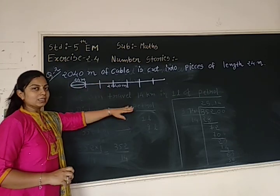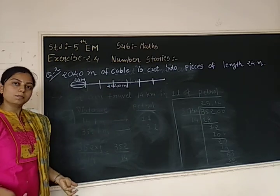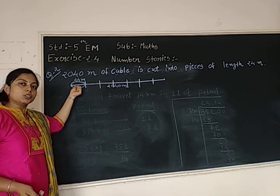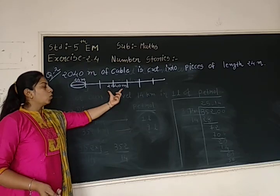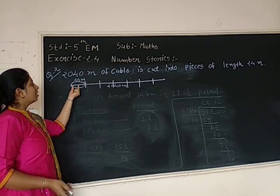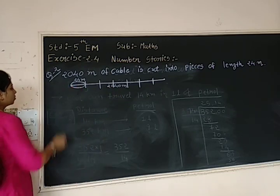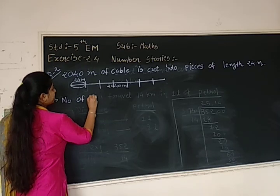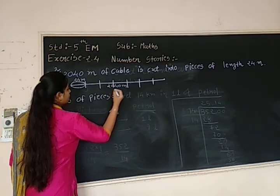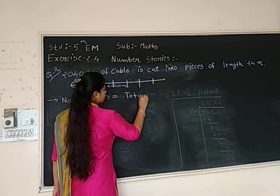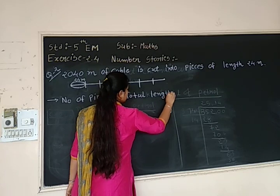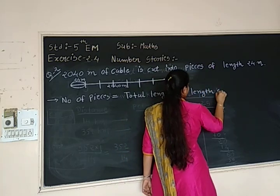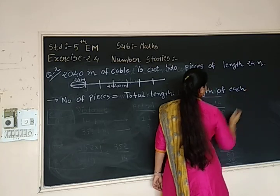Cut means division. They are dividing the cable into small small parts. So let us perform division. Total length divided by the length of each piece. Again I repeat. Total length of cable divided by length of each piece. So what I am writing here. Number of pieces is equal to total length divided by length of each piece.